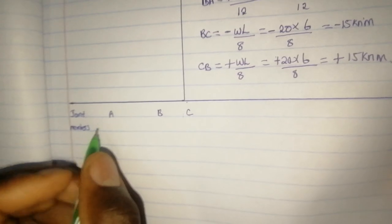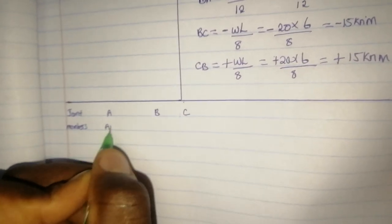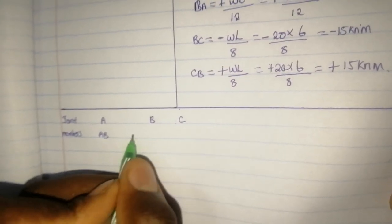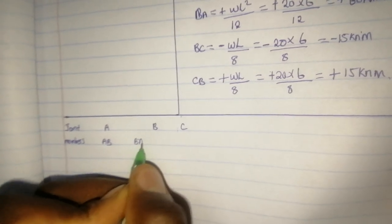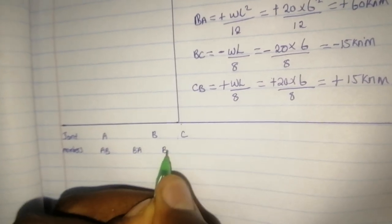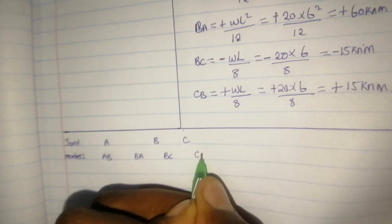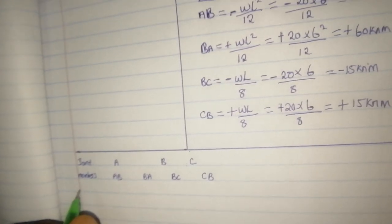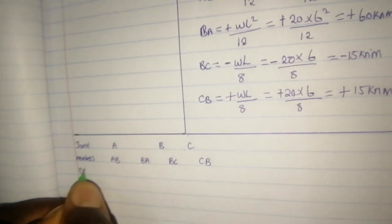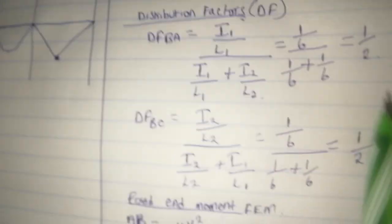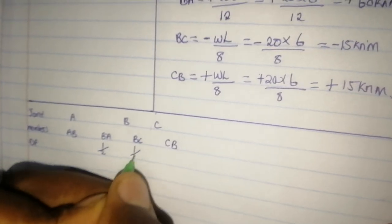In the members row, we have AB, BA, BC, and CB. For the DF row, the distribution factors apply at the center joint B. We have one-half for BA and one-half for BC, both sides.